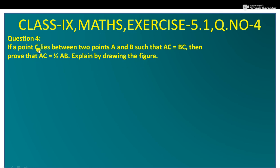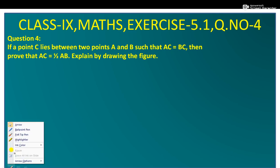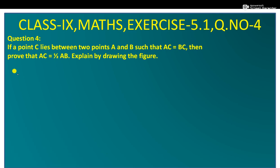If a point C lies between two points A and B such that AC is equal to BC, then prove that AC is equal to half of AB. Explain by drawing the figure. Let's see how we do this. We can solve this.